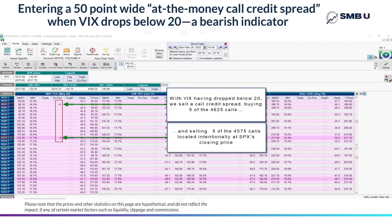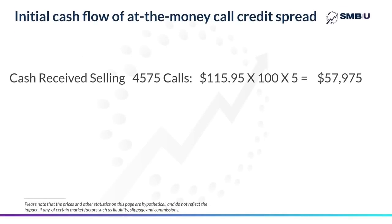Let's first break down what has happened here from a cash flow standpoint. As you can see, we sold five of the 4575 calls for $115.95. And because each option represents $100 per point beyond the strike price, you multiply that by 100 and you sold five of them. So multiplying them all together, you'll receive $57,975 in cash into your account.